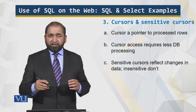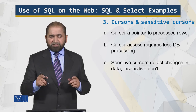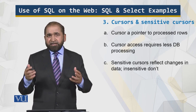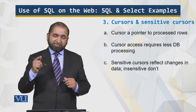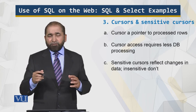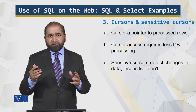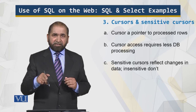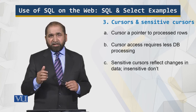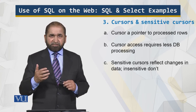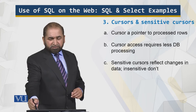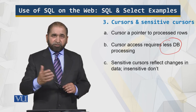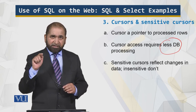So what is a cursor? Again, we are talking about performance. A cursor is a pointer to the processed rows. There is a query, the data is retrieved, and that data is in a cursor — I access that cursor. I won't go into details because that is part of the database course, but right now when I make that query, I have this cursor which is a reference. Having this cursor requires less database processing because the data has been retrieved and I can reference it.